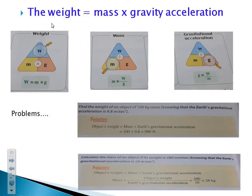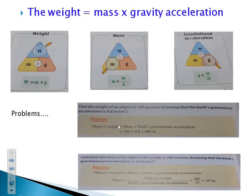As we knew before from the first term and from grade 6, we have the formula: weight equals mass times the gravitational acceleration. And from the magic triangle, we can get the weight equals mass times the gravitational acceleration. If you want to calculate the mass or the gravity, you can divide weight over the mass.